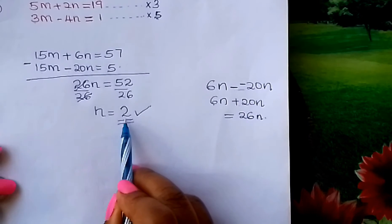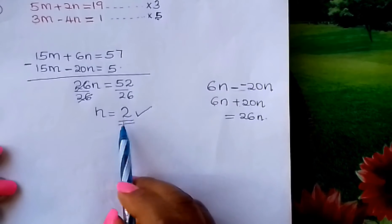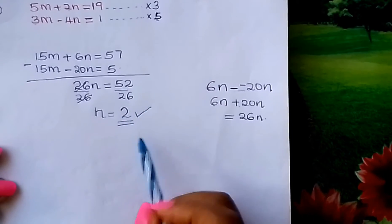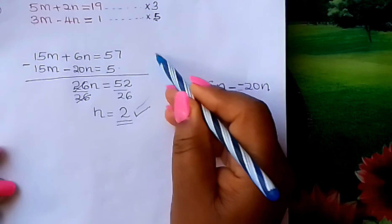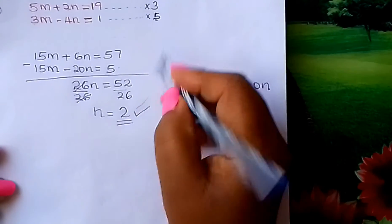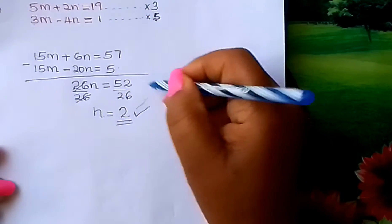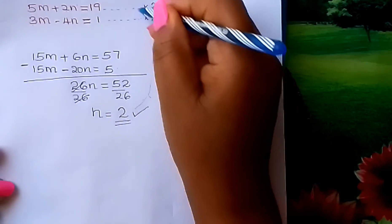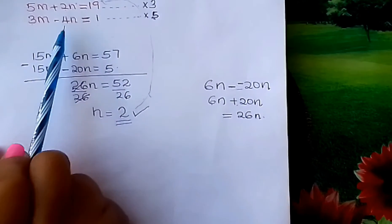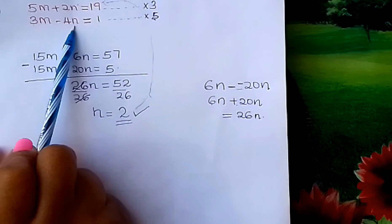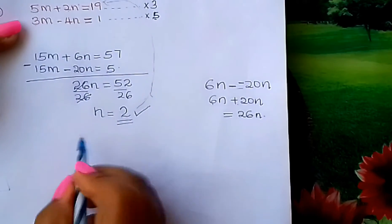Once you've got the value of N, you now ask yourself, what is the value of M and how do I get it? What you do is take this N to either the first equation or the second. You substitute that N. Let's use the first equation.